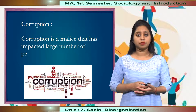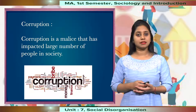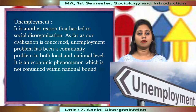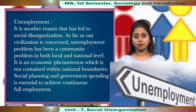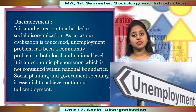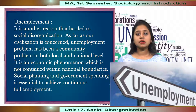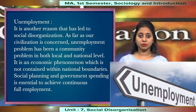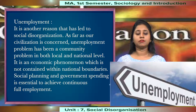Then we have corruption, a malaise that has impacted a large number of people in society. Thirdly, unemployment is another reason that has led to social disorganisation. Unemployment has been a community problem both at the local and national level and is an economic phenomenon not contained within national boundaries. Social planning and government spending are essential to achieve continuous or full employment.